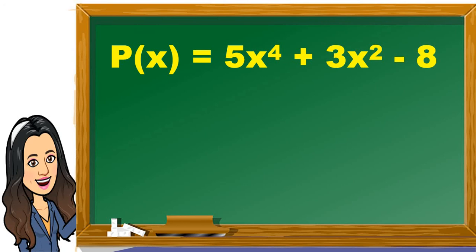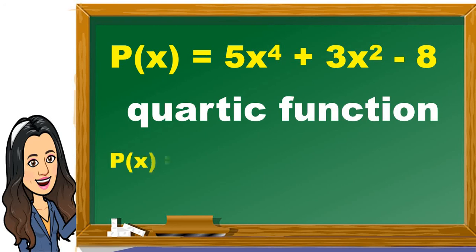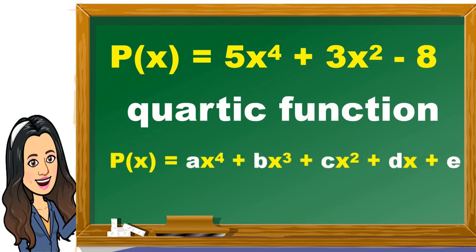Another example is p(x) = 5x⁴ + 3x² - 8. This is a quartic function. It is in the form p(x) = ax⁴ + bx³ + cx² + dx + e, where a, b, c, d, e are numbers and a ≠ 0. In our example, a = 5, b = 0, c = 3, d = 0, and e = negative 8. This is also called a fourth-degree polynomial because the highest power of x is 4. Here is an example of the graph of a quartic function.